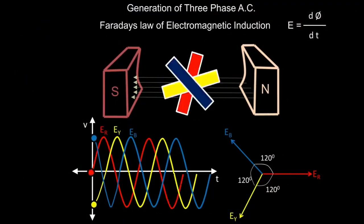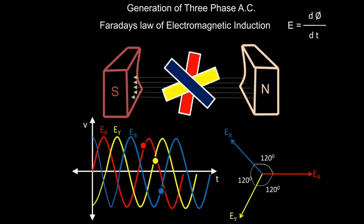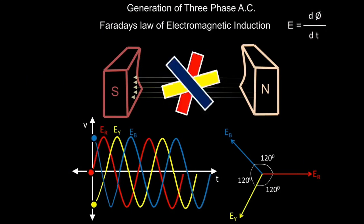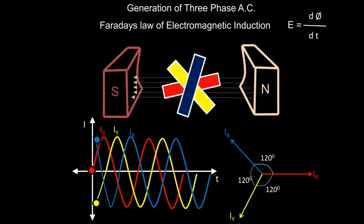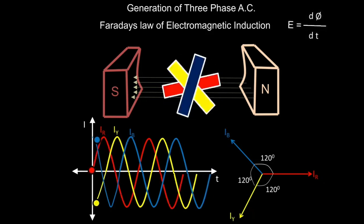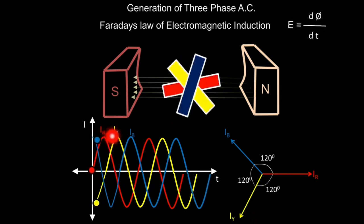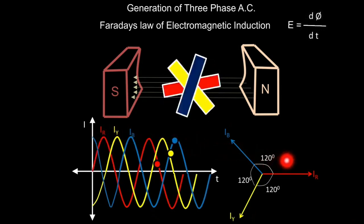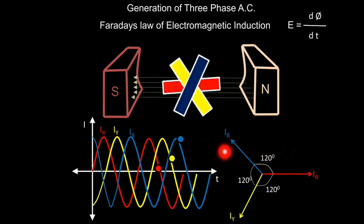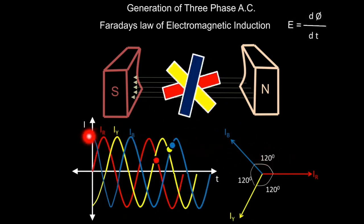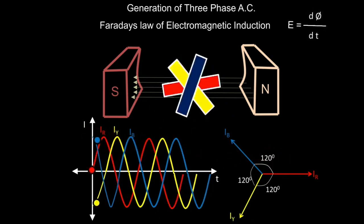Because of these three voltages, three currents will flow. As there is a phase displacement of 120 degrees between the three voltages, there will also be a phase displacement of 120 degrees in the three-phase current. So we are having IR, IY, and IB, and again IR, IY, and IB will have 120 degrees of phase displacement. This is called three-phase current.